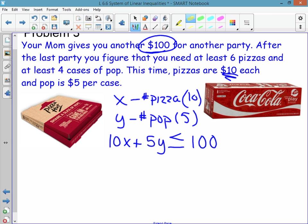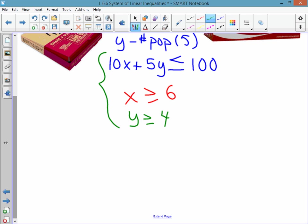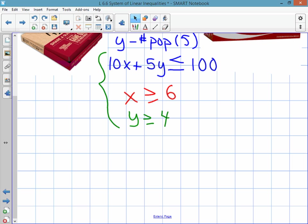Now, this information in the middle, at least six pizzas and at least four cases, this is giving you two more inequalities. At least means you have to buy six pizzas or more. So, I'm going to take the number of pizzas, x, and I'm going to write an inequality that says I've got to buy more than or equal to six. And I'm going to take the number of cases of pop, y, and write another inequality that says I have to buy more than or equal to four. So, now you have a system that has three different inequalities. Okay, don't freak out. I know you haven't seen one like this before, but I'm going to keep going. Try your best.